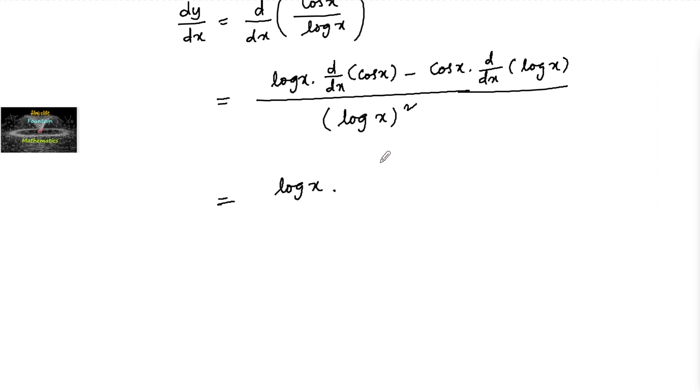Log x into... differentiation of cos x is minus sin x, minus cos x into differentiation of log x is 1 upon x, divided by log x whole square.